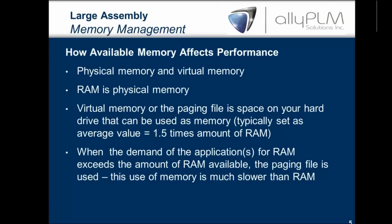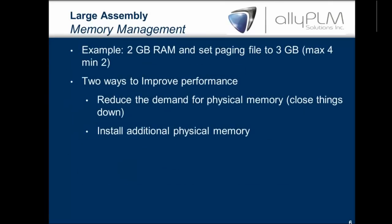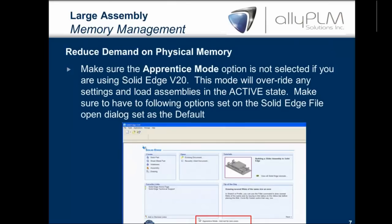There are two ways to improve performance: one is to reduce the demand for physical memory, and two is to install more physical memory. If you're still on V20, the first thing you want to do is uncheck the apprentice mode box on your splash screen. This will free up some memory for you, especially when dealing with large assemblies.